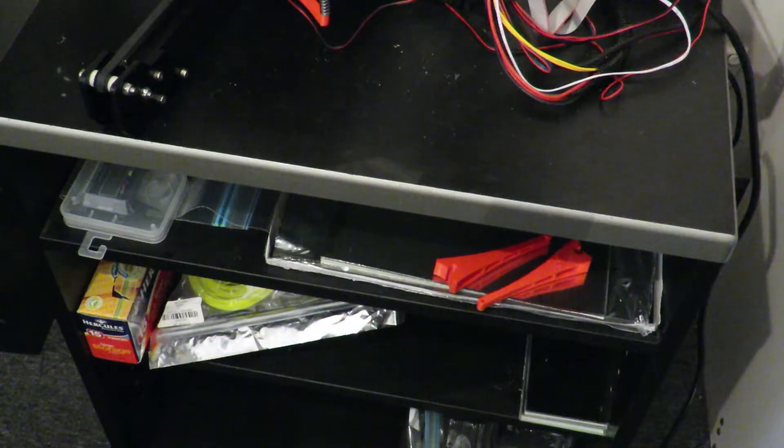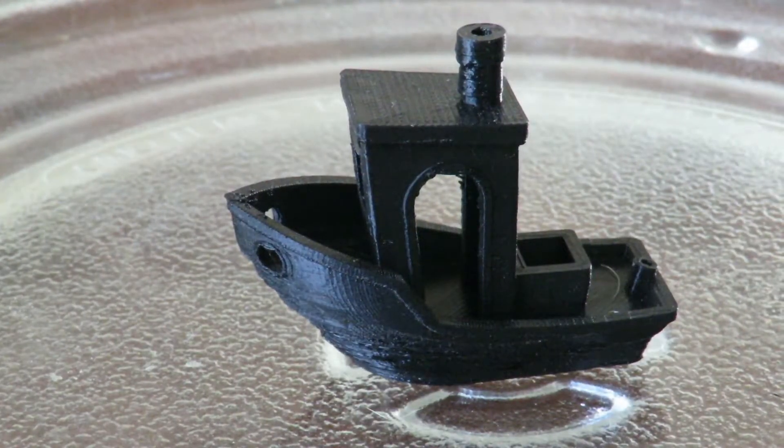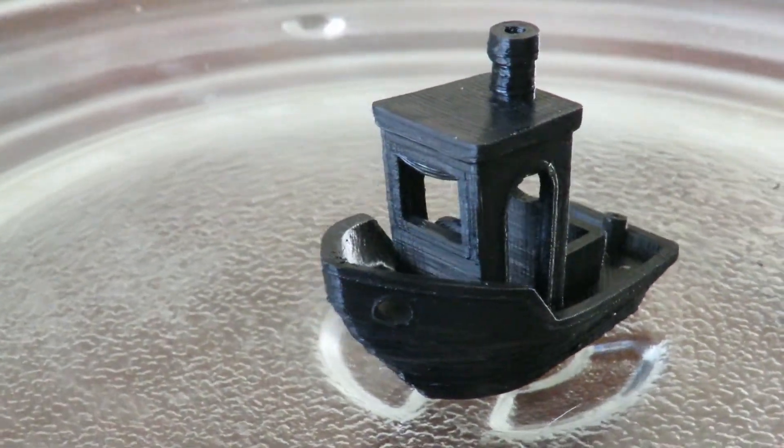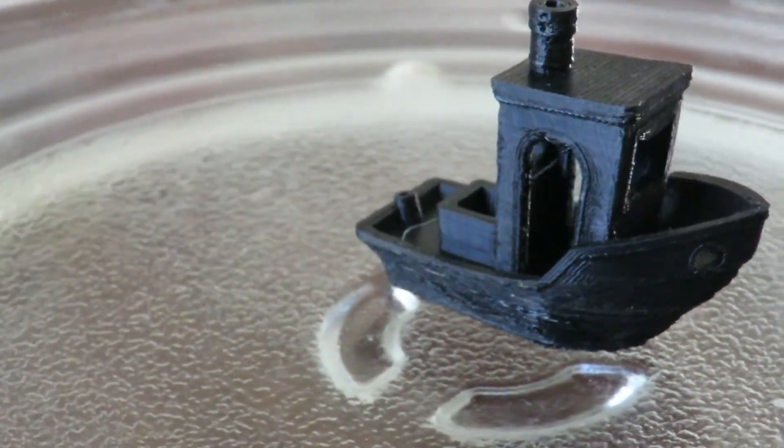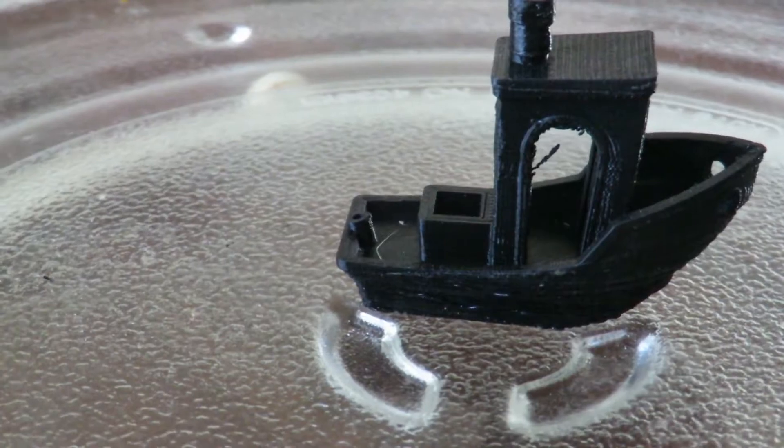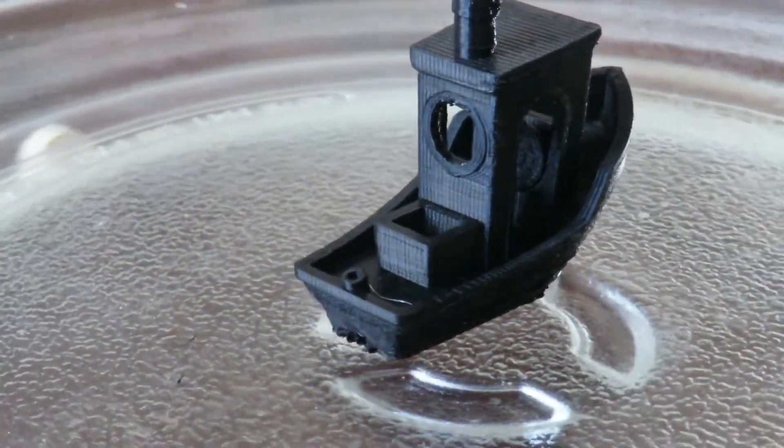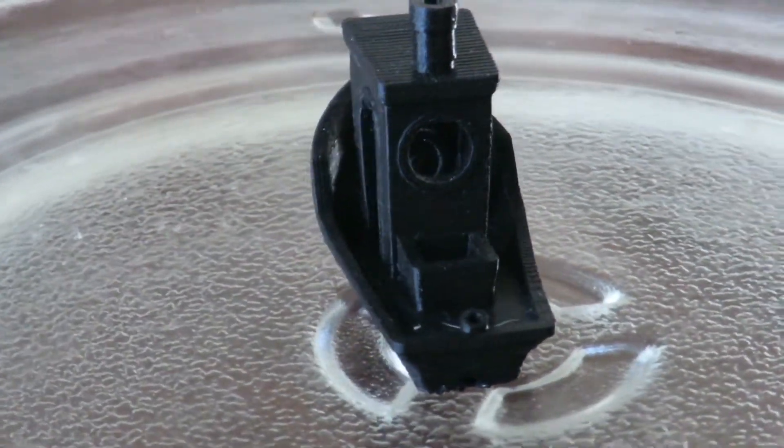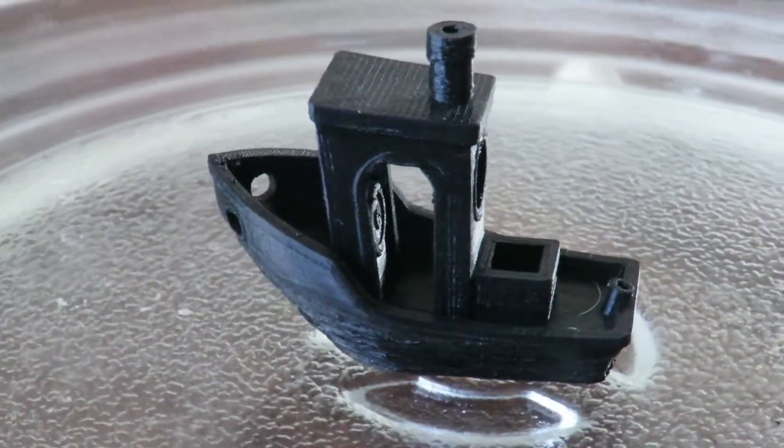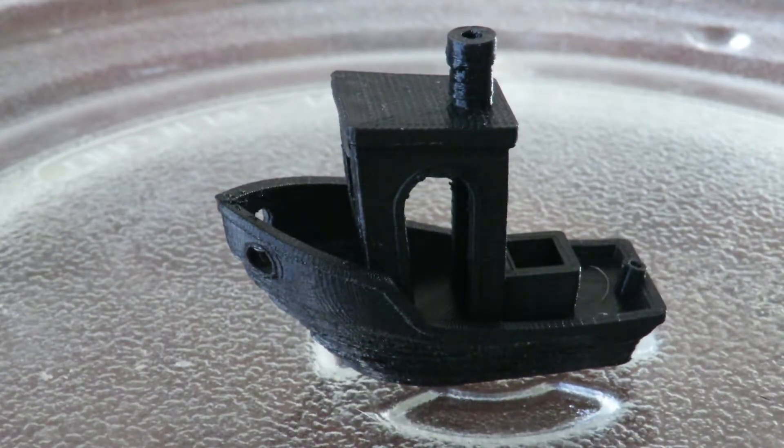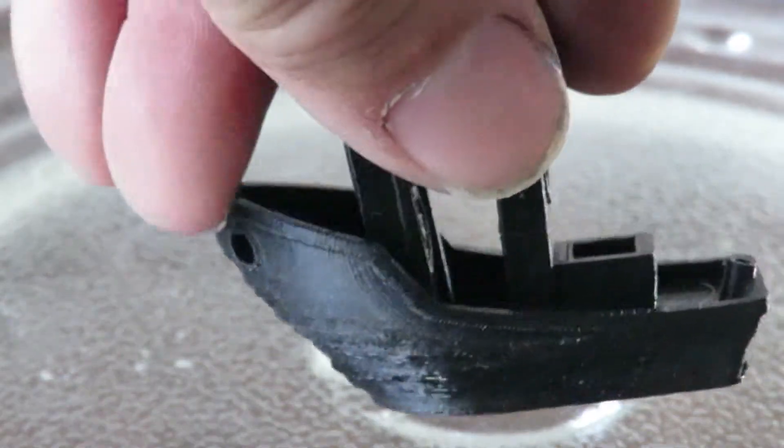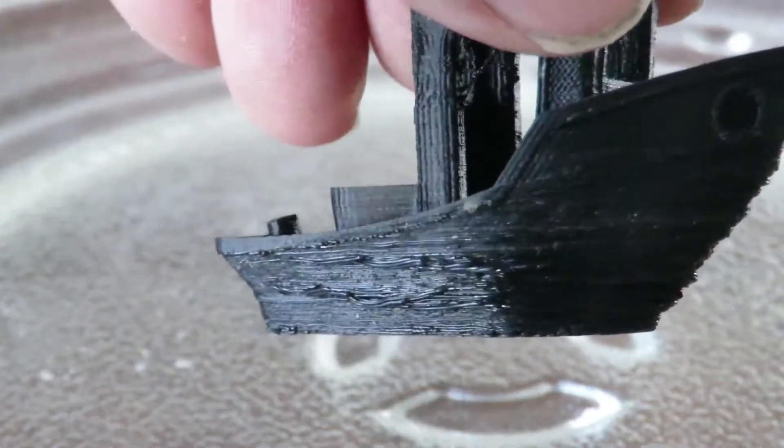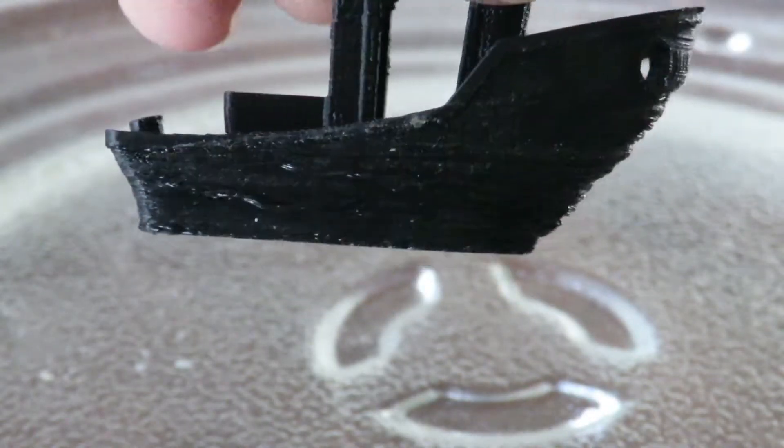Now this little benchy was printed out with a little bit of bed wobble that I had in the Tevo Tarantula. Just moving it around slowly so you can have a look at it. There's no cooling fan being used in this particular print. I'll just lift it up and show you underneath there. It's a bit rough around the bow of the boat and not the prettiest of prints, as one would say.